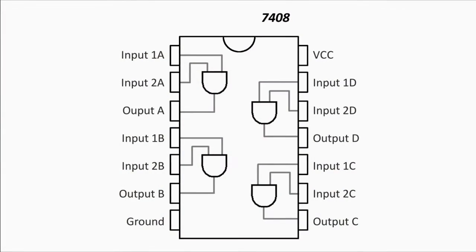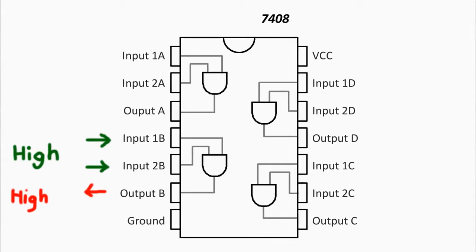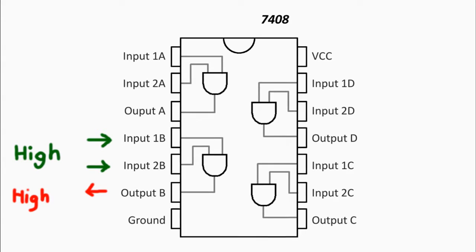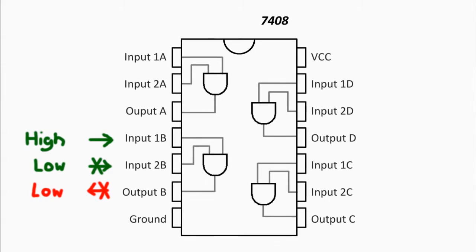If we look at just one of the actual gates, the idea is: if you have 5 volts going to both inputs, then the output will also have a 5-volt output. Otherwise you will not get your 5-volt output. Simple as that.